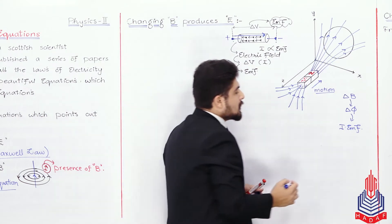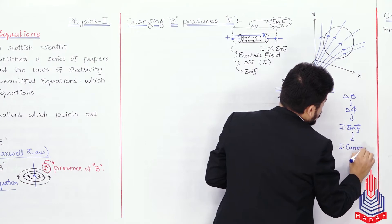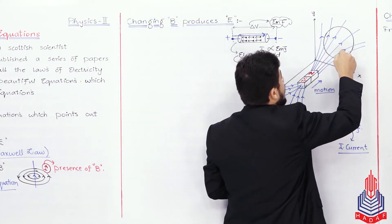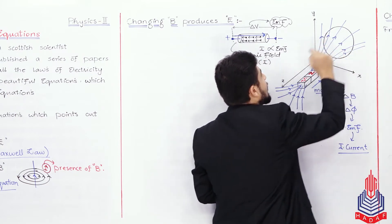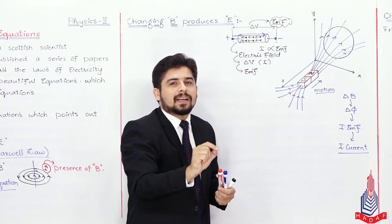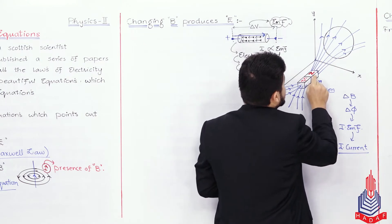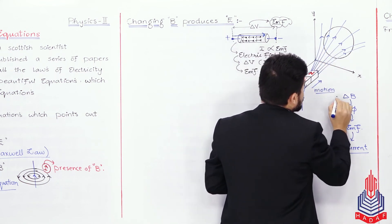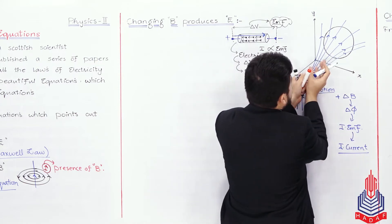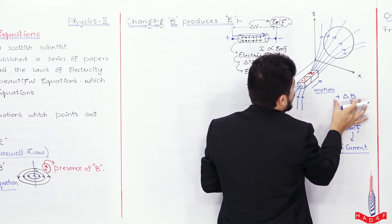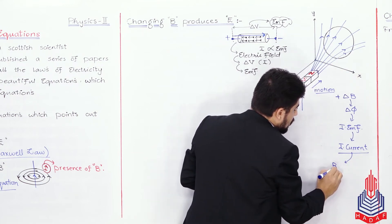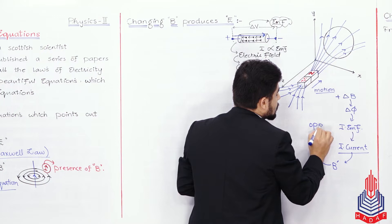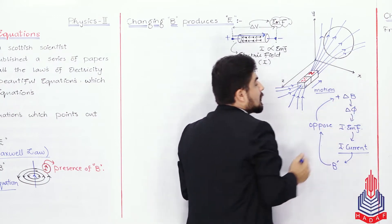And the EMF will cause charges to flow — that is, there will be an induced current. Now from Faraday's law we know that the direction of the induced current will be such that the magnetic field produced by that current will oppose the change in magnetic flux coming from the magnet. Right now the change of magnetic flux is of positive nature because we are bringing the magnet closer, so field lines are increasing — there is a positive rate of change of flux. The induced current will create its own magnetic field B', which will always be in a direction to oppose whatever is causing it.